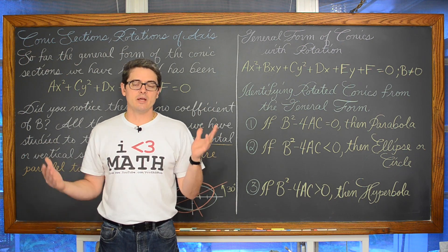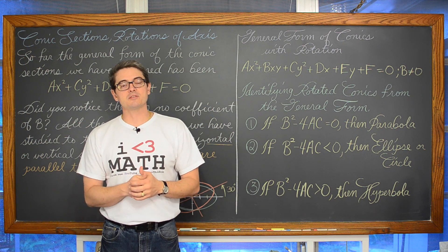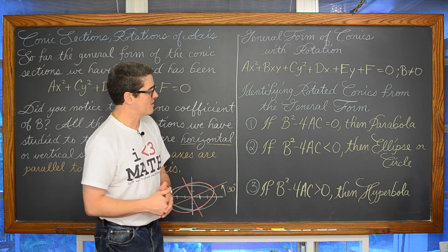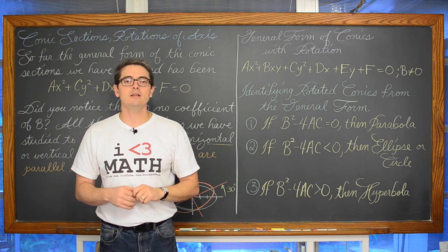So now that we got the introduction out of the way, let's take a look at a couple examples where we identify the type of conic section when there is a little bit of rotation.